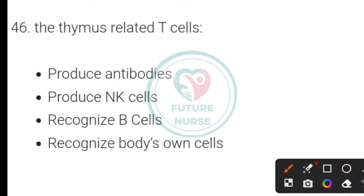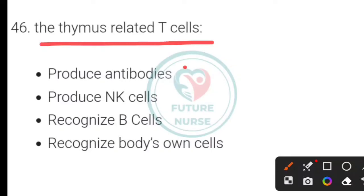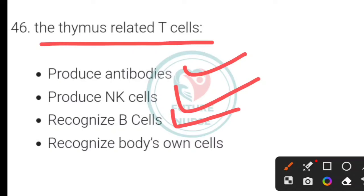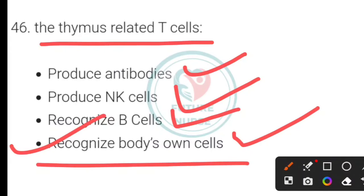Thymus-related T-cells do which of the following? Options: produce antibodies, produce NK cells, recognize B-cells, or recognize the body's own cells. The correct answer is option D — they recognize the body's own cells.